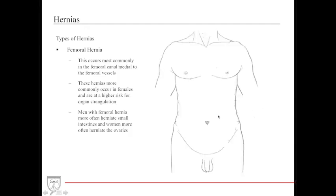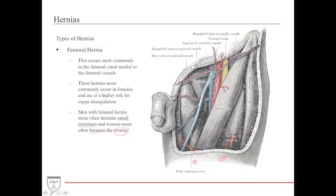The femoral hernia occurs in the area of the femoral canal, down near the inguinal crease, and occurs medial to the femoral vessels. These hernias more commonly occur in females and carry a higher risk for organ strangulation than inguinal hernias. In men, a femoral hernia will most likely herniate small intestines; in women, it will more likely herniate the ovaries. This occurs medial to the inguinal ligament, in the area of the femoral canal.